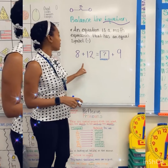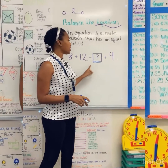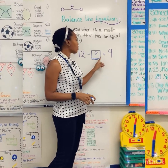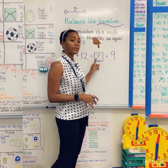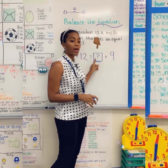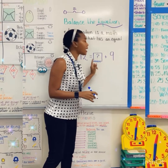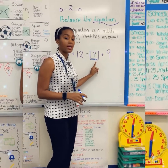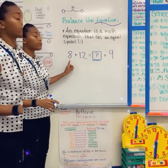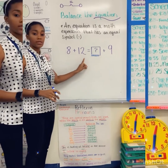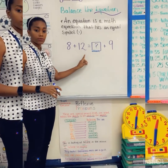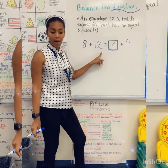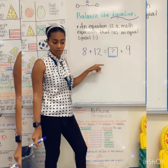Let's look at our problem: 8 plus 12 equals question mark plus 9. The question mark is an unknown number, so we don't know that number yet, which means we're not able to start on this side just yet. So therefore I have to start with the 8 plus 12. We need to solve 8 plus 12. Who can tell me how we're going to go about solving that number?